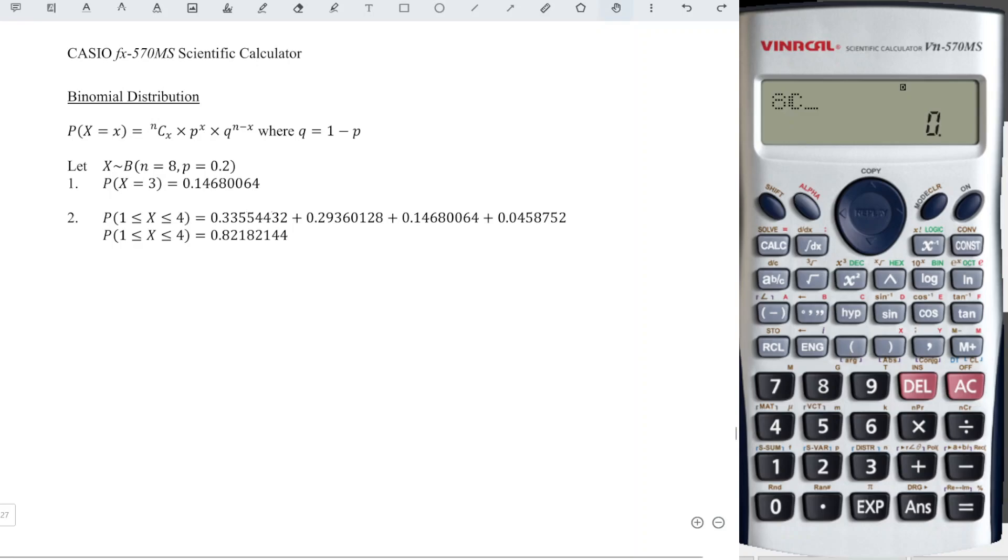X are known, so we have alphabet X times p. Given by the question is 0.2, so 0.2 to the power of alphabet X. And then times q, q is 1 minus p. Of course, we can input 0.8 directly, or to be safe, we can put 1 minus 0.2 with bracket.